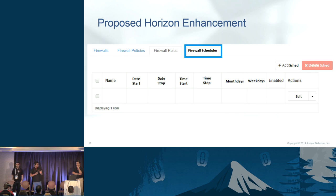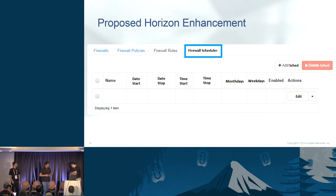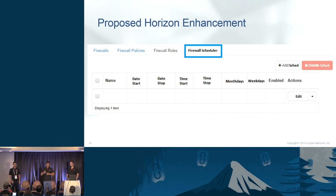To get this feature working in OpenStack, we enhanced several areas: the Horizon UI, the Neutron client, the firewall service plugin, and the firewall agent. In Horizon, when you navigate to the firewall section you will see one additional tab where you can define your schedule — giving it a name and various parameters. When creating a rule, you are given an option to select the schedule you want to associate with that rule, such as a nine-to-five schedule.